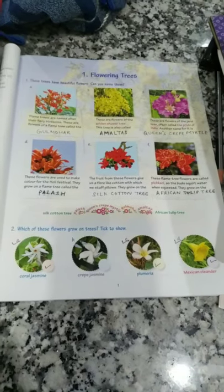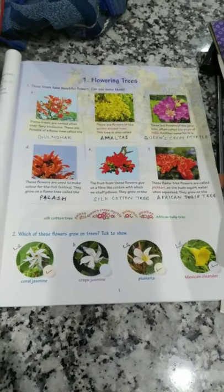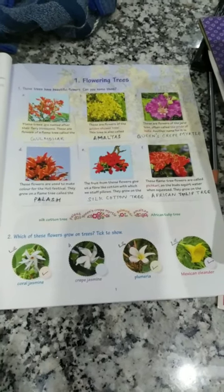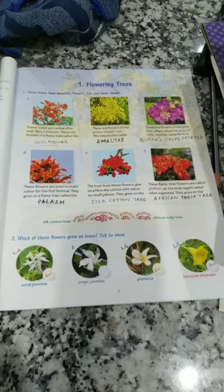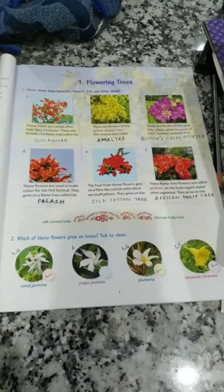See the first one — that is coral jasmine, also known as night flowering jasmine. The flowers are very fragrant and it grows up to 30 feet in height.